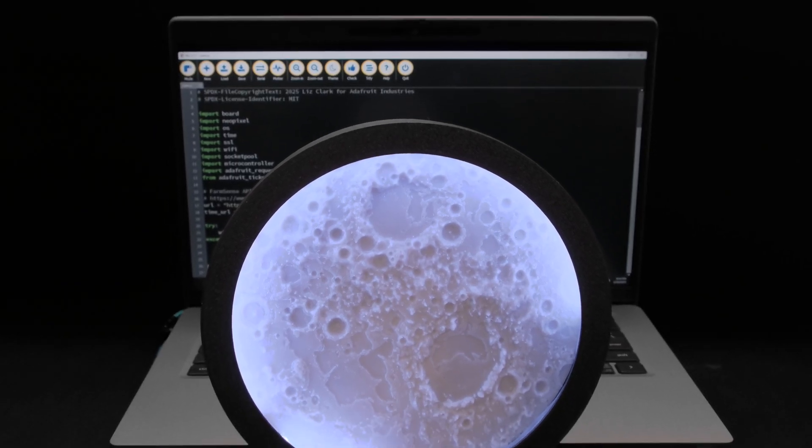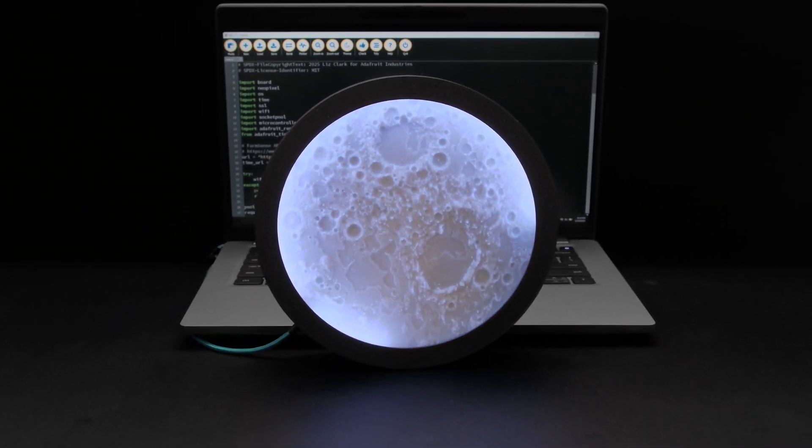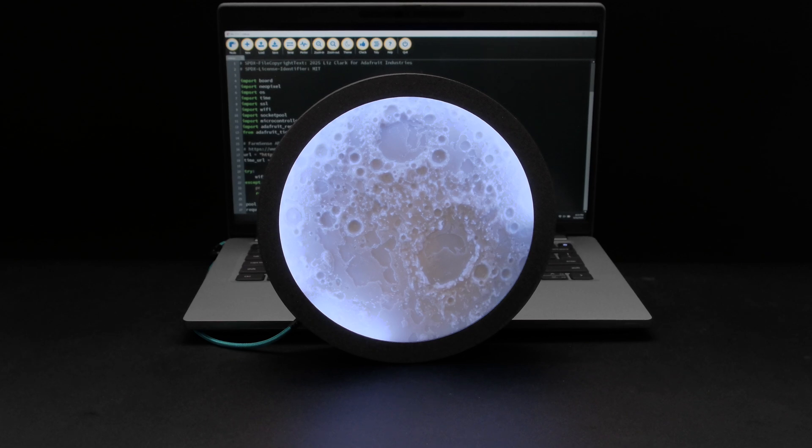The NeoPixel LED strip wraps around the 3D printed moon to illuminate the edges creating a moonlit effect.